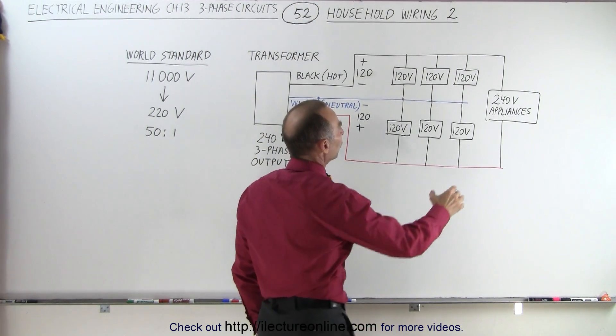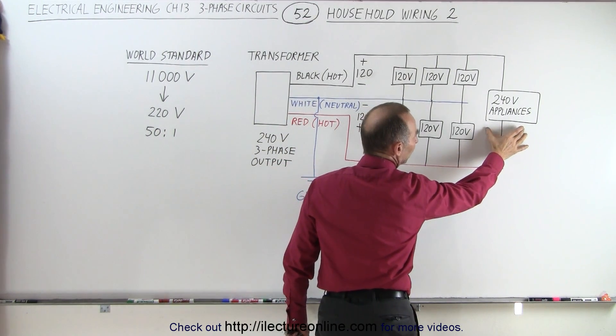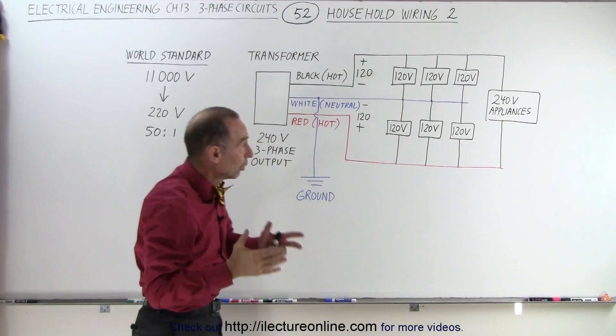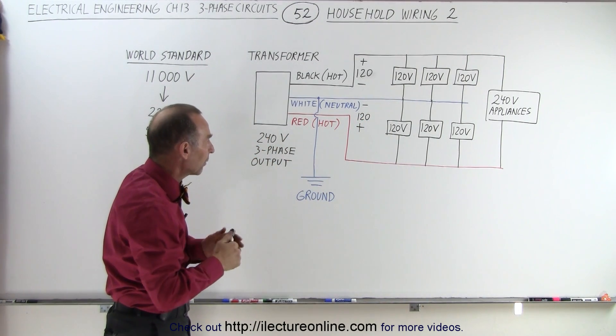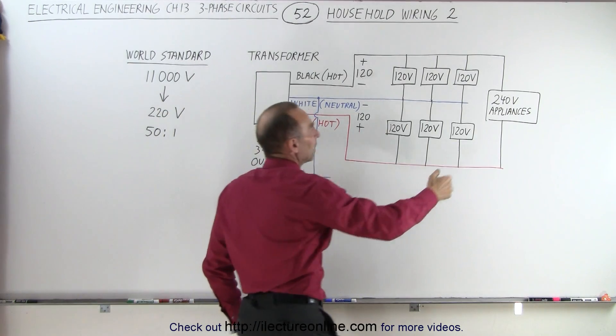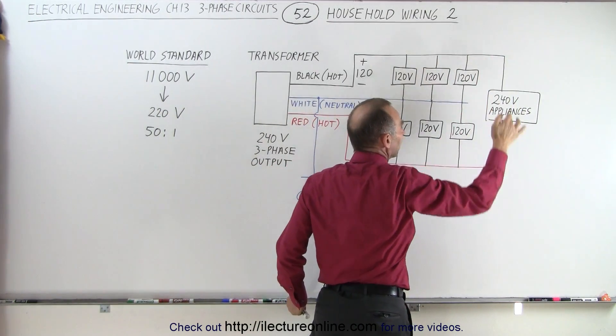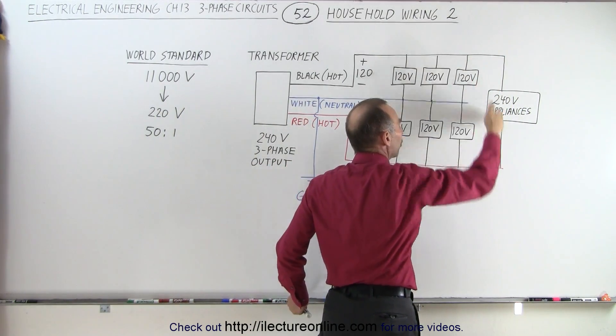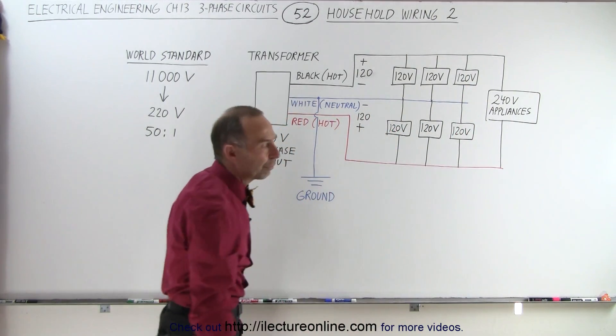If you have a 240 volt appliance that you want to connect to the wiring, then typically what we do is we connect the hot wire on one side and the hot wire on the other side which has a total differential of 240 volts.